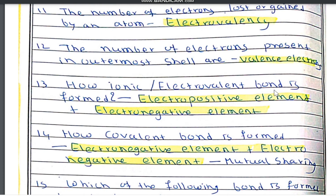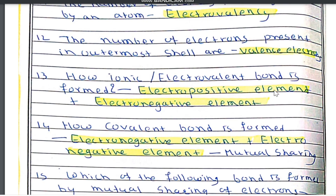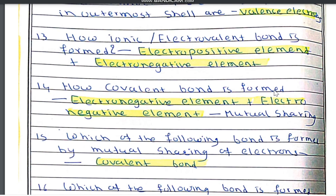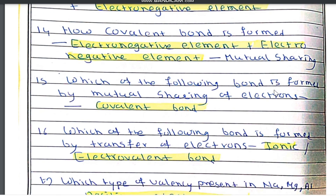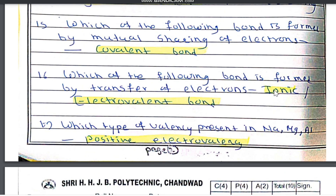Question number 14: how is a covalent bond formed? It is formed between two electronegative elements by mutual sharing of electrons. Which bond is formed by mutual sharing of electrons? It is the covalent bond. Which bond is formed by transfer of electrons? It is the ionic bond or electrovalent bond, formed by loss or gain of electrons.